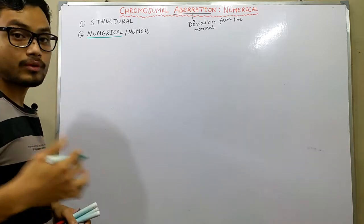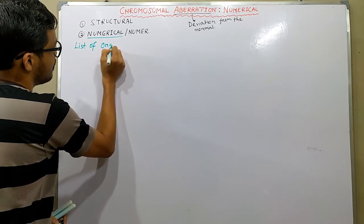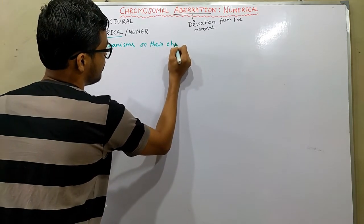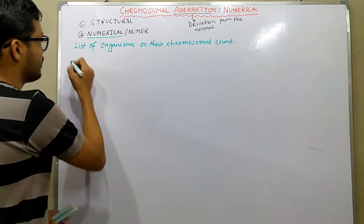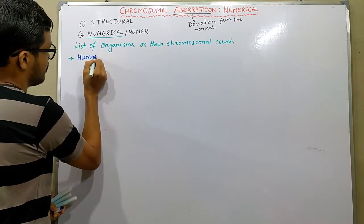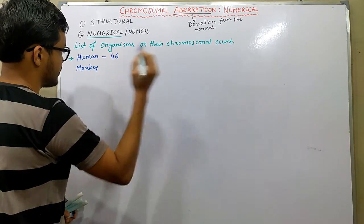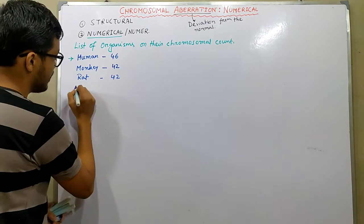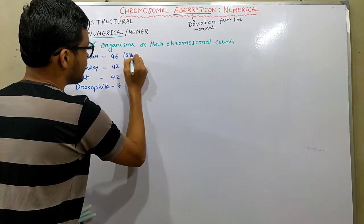Let's talk about chromosomal counts based on different organisms. In the case of humans, we observe the number 46. In the case of monkey — that is Macaca — we find the number 42. In the case of rat, we also find 42. In the case of Drosophila, the number is 8. These numbers stand for 2N, that is the diploid number.